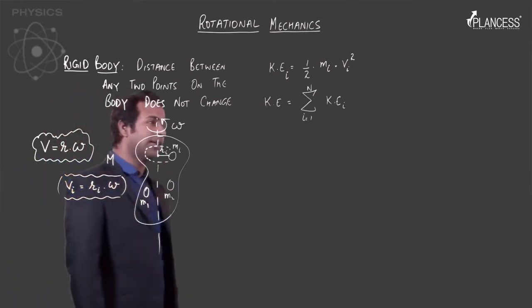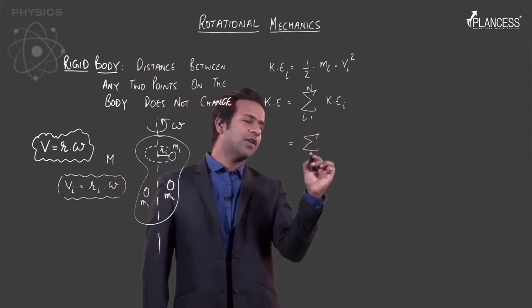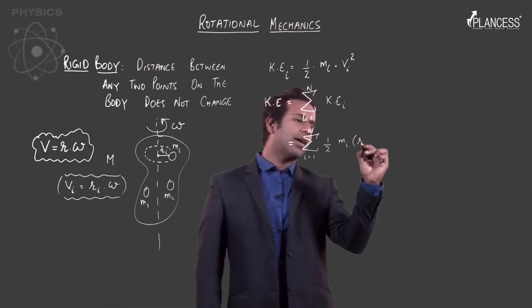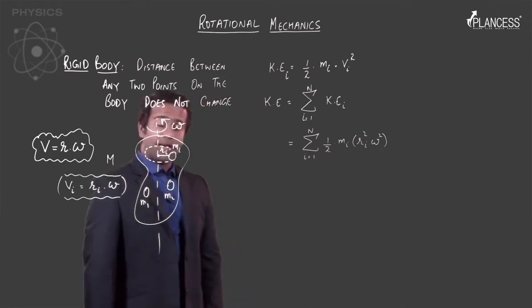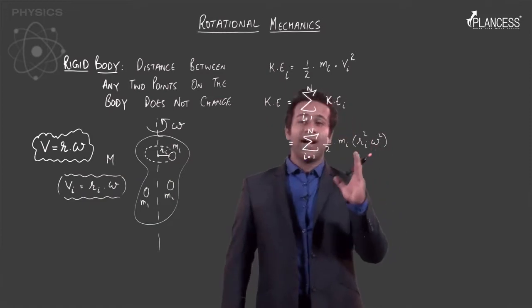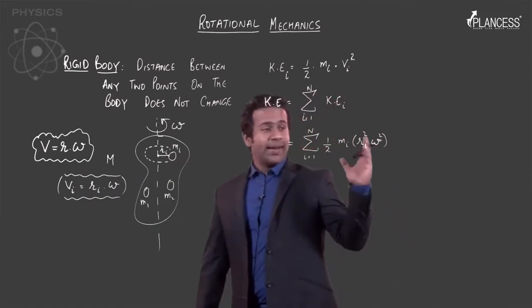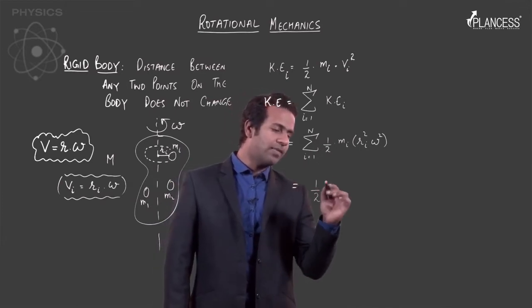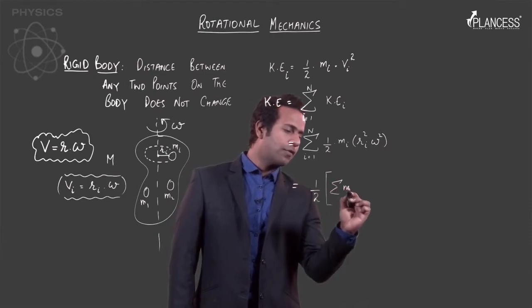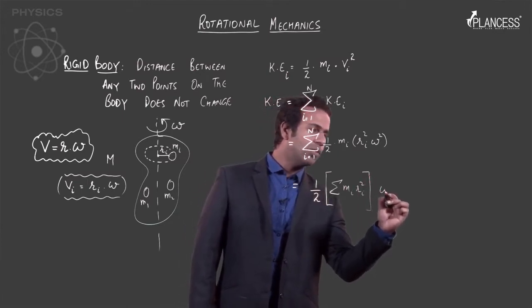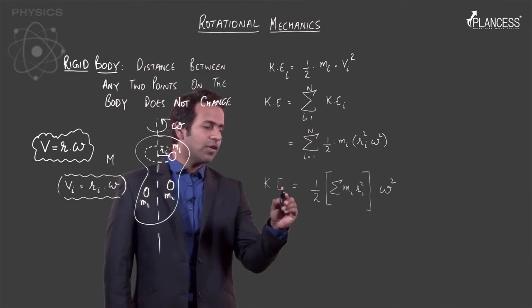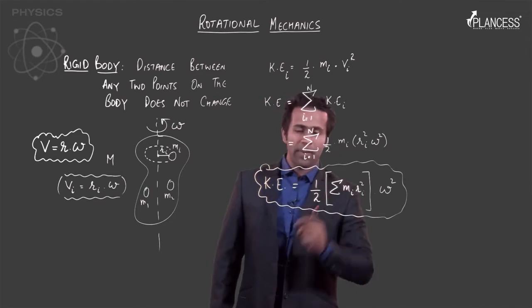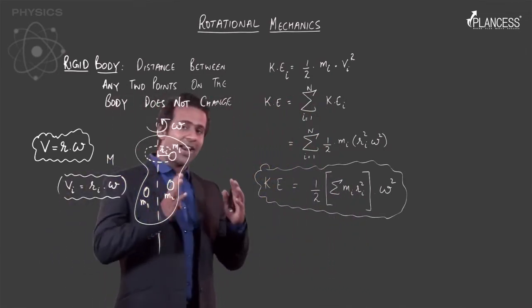So this equation can be written as summation of i from 1 to n, half into Mi into Ri square omega square. In this expression, you see that omega is a constant, so we can take omega out of the summation. Half can also be taken out. So you would have half into summation of Mi Ri square into omega square. So the total kinetic energy of this body when it spins is of this form.